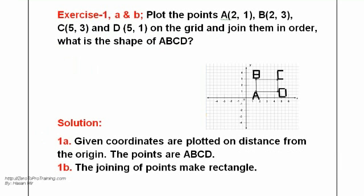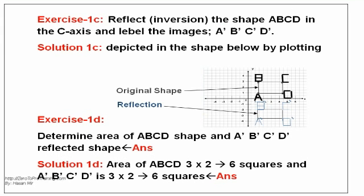Exercise 1A: Plot points A(2, 1), B(2, 3), C(5, 5), and D(5, 1) on the grid. 1B: The shape of ABCD is rectangle in the first quadrant. 1C: As depicted the shape. 1D: Area of the original shape is 3 times 2 squares and reflected shape is 3 times 2 squares, both 6 square units.